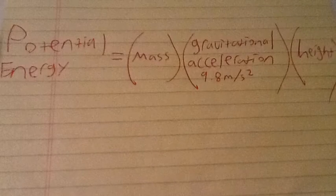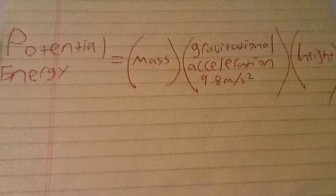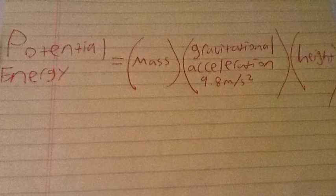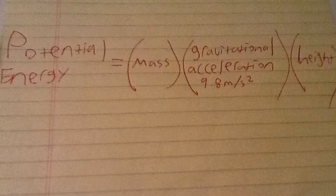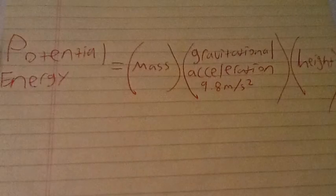Now, initially, the stationary block has no kinetic energy because it is not in motion. Instead, it has potential energy, which is equal to the product of its mass, its height, and gravity. Mass and gravity are given, but we must calculate h.